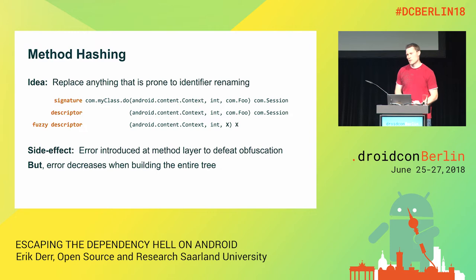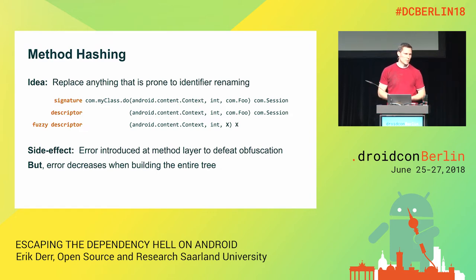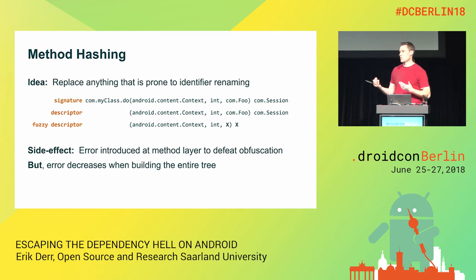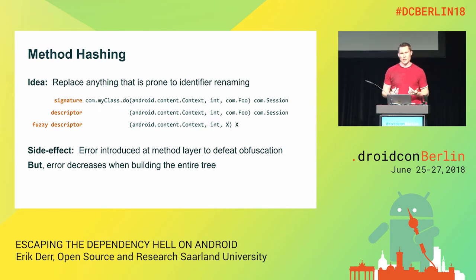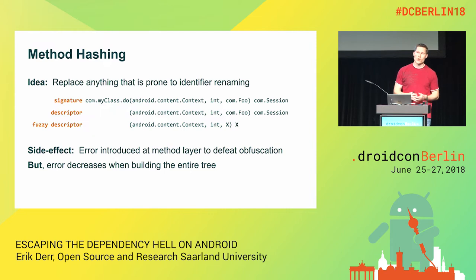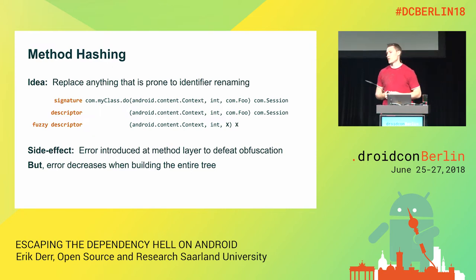The insight here is that we intentionally introduce an error at that point to defeat the obfuscation. This fuzzy descriptor would not only match the original signature, it would also match similar signatures. But as soon as we build the tree, adding hundreds of methods, classes, and packages, we receive a very unique Merkle tree that represents a profile for our library version.